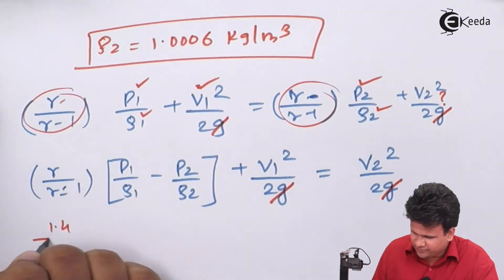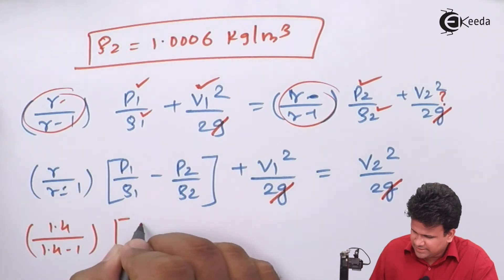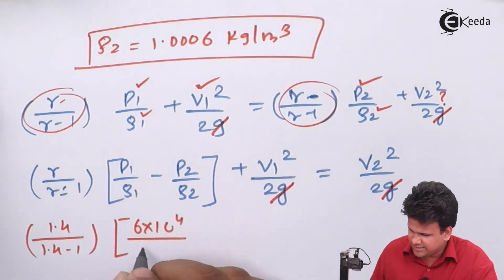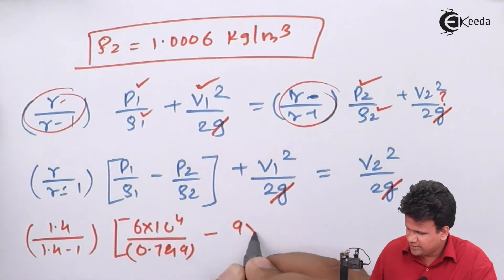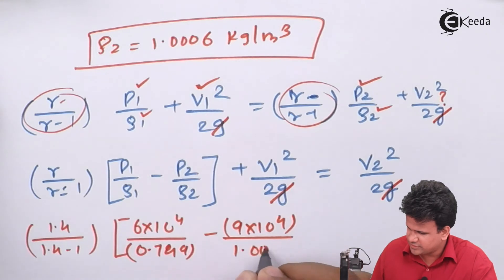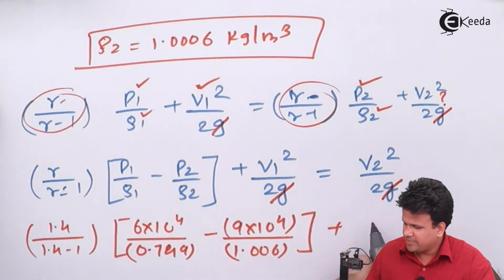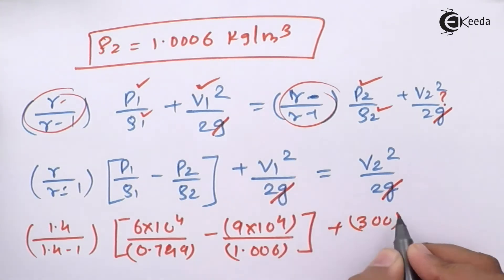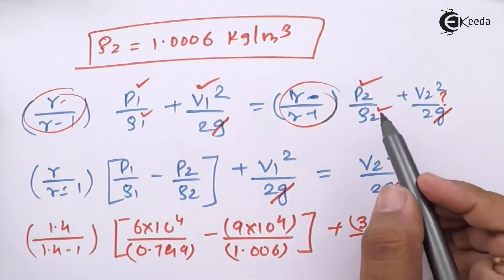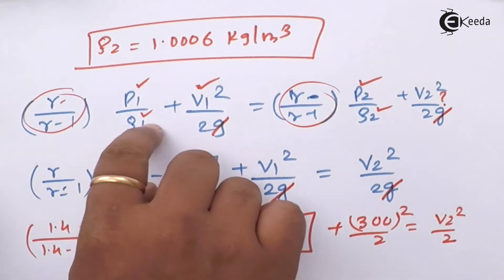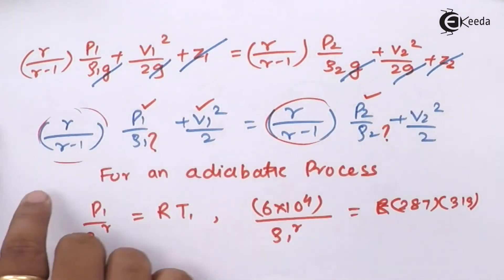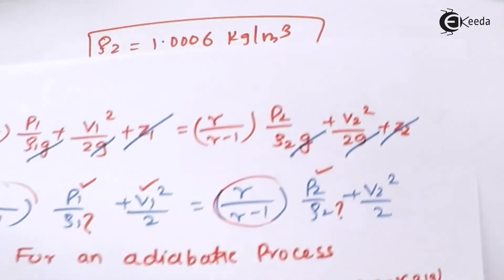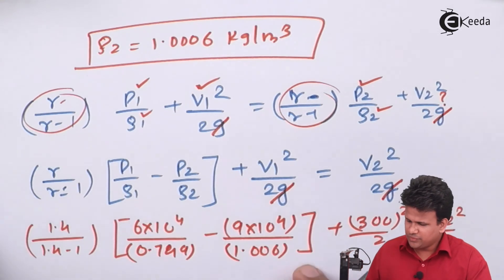Substituting values: 1.4/(1.4−1) · (6×10⁴/0.749 − 9×10⁴/1.006) + 300²/2 = V2²/2. G is not included because it appears on both sides and cancels. As confirmed in the previous derivation, this is the form of Bernoulli's equation we apply.